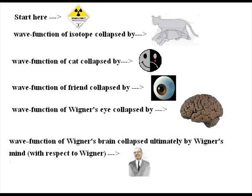So it doesn't make any sense to say that his friend wasn't really seeing anything before he opened the door. His friend actually did collapse the wave function of the cat with respect to himself. But then likewise, Wigner collapsed the wave function of the interior of the laboratory with respect to Wigner.